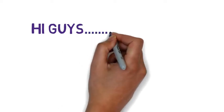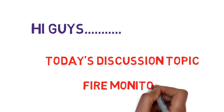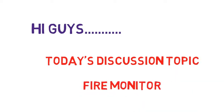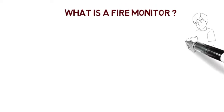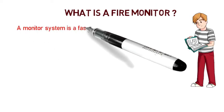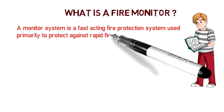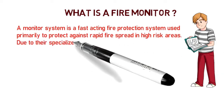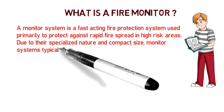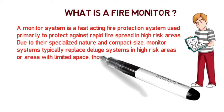Hi guys, today I'm going to discuss about a fire monitor system. So what do you mean by a fire monitor? They are the industrial monitor devices used to deliver large water flows for fire fighting purposes. A fire monitor system is a fast-acting fire protection system used primarily to protect against rapid fire spread in high-risk areas.